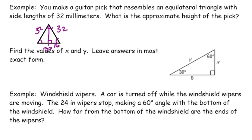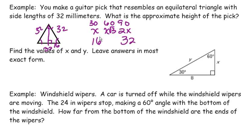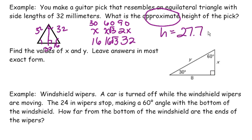This side has been divided into two congruent parts, so this is 16. My pattern for a 30-60-90 right triangle is X, X radical 3, 2X. I know that my short leg — the one opposite the 30-degree angle — is 16, and my hypotenuse is 32, so my long leg is going to be 16 radical 3. They ask for the approximate height of the pick, which means we go ahead and multiply 16 times radical 3. When you do that, you get approximately 27.7 millimeters, and that's how you use the 30-60-90 pattern to solve a problem.